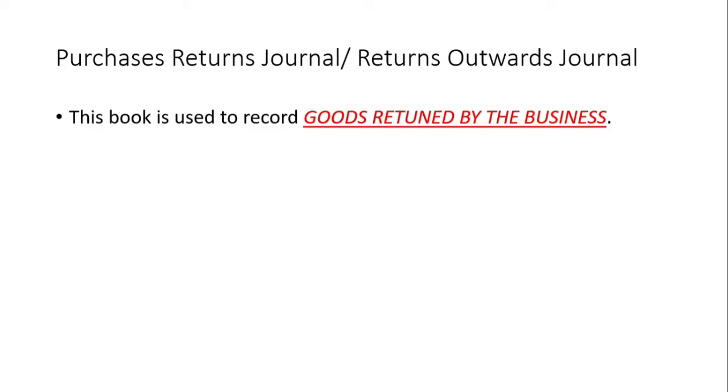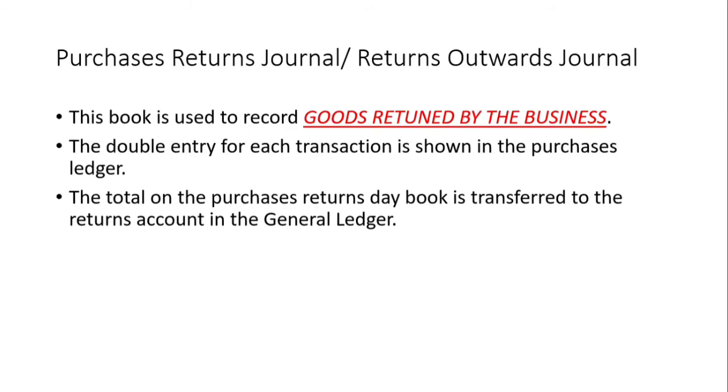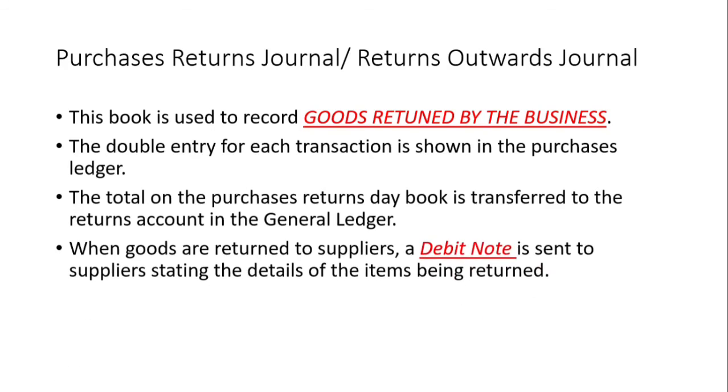Then we move on to the purchases returns journal, also called the returns outward journal, because there are times when we buy goods and for some reason the goods are defective and we have to send them back to the suppliers — that is what we call purchases returns, or previously returns outwards. This book is used to record goods returned by the business to suppliers. The double entry for each transaction is shown in the purchases ledger, and the total in the purchases returns day book is transferred to the returns account in the general ledger. When goods are returned to suppliers, a debit note is sent to the supplier stating the details of the items being returned — very important.